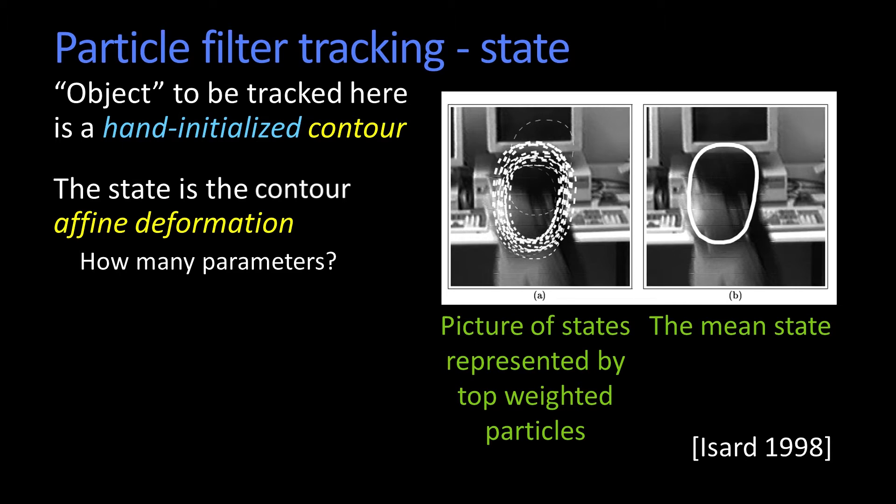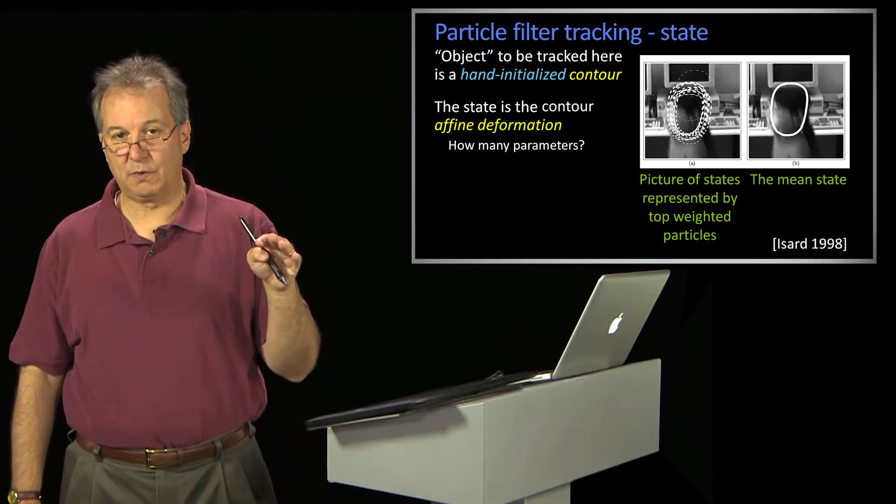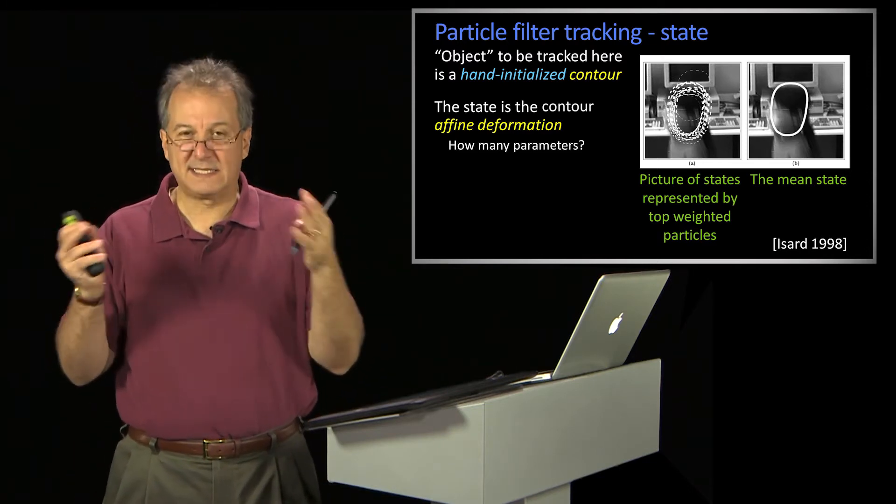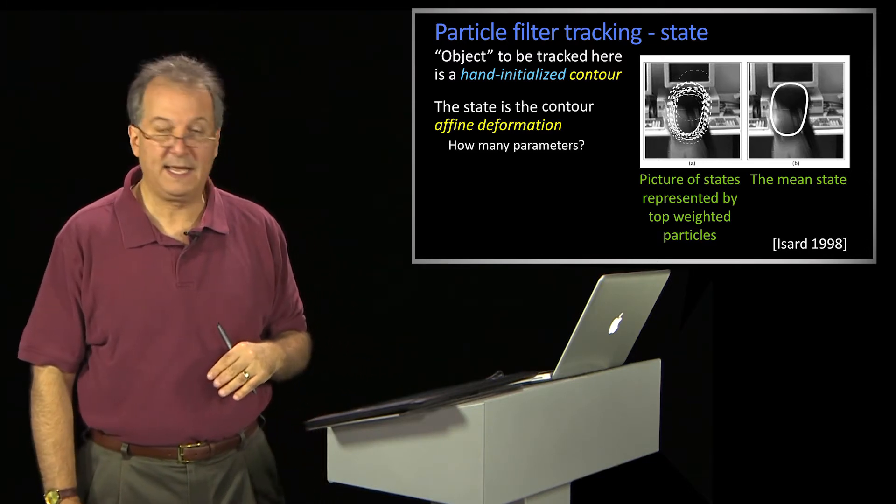Remember affine? Affine is a three point to three point mapping, takes how many parameters? It's six parameters. Translation, rotation, scale, and shear, depending upon how you count them. It's six and you can sort of divide them up any way.